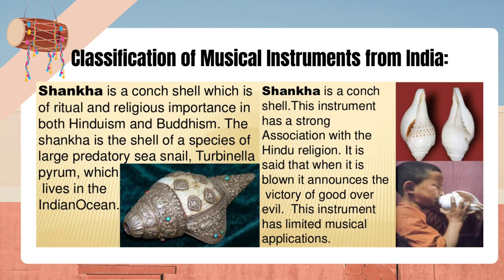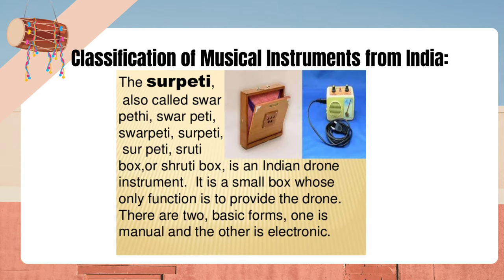Shankha is a conch shell of ritual and religious importance in both Hinduism and Buddhism. It is the shell of a species of large predatory sea snail, Turbinella pyrum, which lives in the Indian Ocean. It has a strong association with the Hindu religion — it is said that when blown, it announces the victory of good over evil. This instrument has limited musical applications. The Shruti box, also called Swarpeti or Serpeti, is an Indian drone instrument — a small box whose only function is to provide the drone. There are two basic forms: one is manual and the other is electronic.